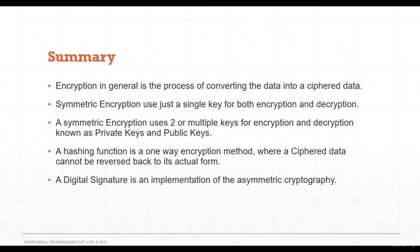Summary of encryption: encryption is the process of converting data into cipher data. Symmetric encryption uses a single key for both encryption and decryption. Asymmetric encryption uses two or multiple keys — private and public keys. A hashing function is a one-way encryption method where cipher data cannot be reversed. A digital signature is an implementation of asymmetric cryptography.